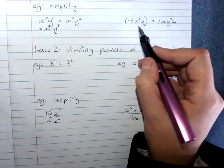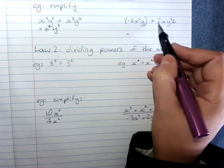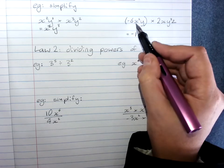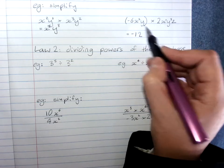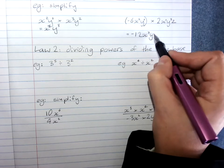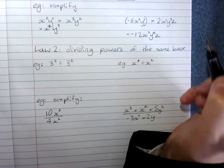Sometimes we will get coefficients involved. Multiply them first. Negative 6 times 2 is negative 12. x squared times x to the power of 1 is x to the power of 3. y to the power of 1 times y3 is y4. And I've got a lonely little z in there.